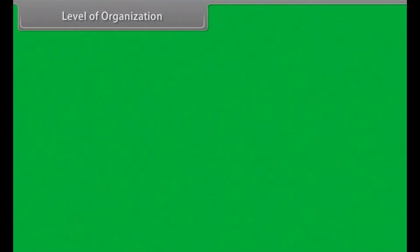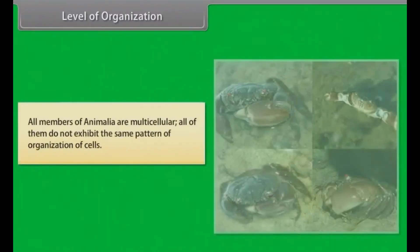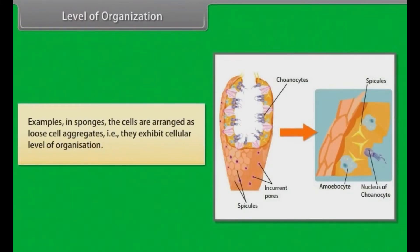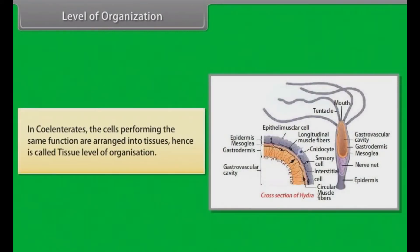Level of organization. All members of animalia are multicellular. All of them do not exhibit the same pattern of organization of cells. Examples: In sponges, the cells are arranged as loose cell aggregates. That is, they exhibit cellular level of organization. In coelenterates, the cells performing the same function are arranged into tissues. Hence, it is called tissue level of organization.